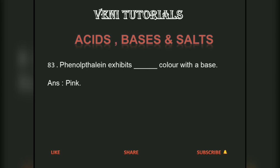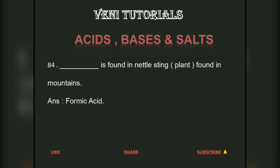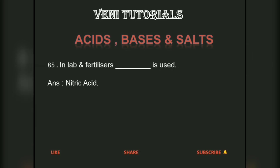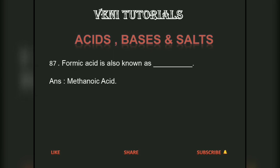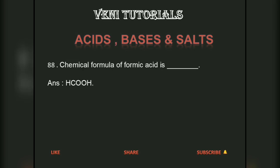Phenolphthalein exhibits a pink color with a base. Formic acid is found in nettle sting found in mountains. Nitric acid is used in labs and fertilizers. HCl is not an organic acid. Formic acid is also known as methanoic acid, with chemical formula HCOOH.